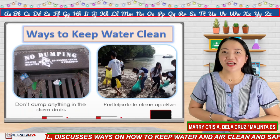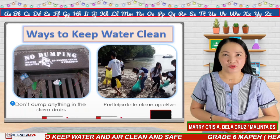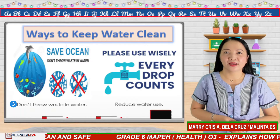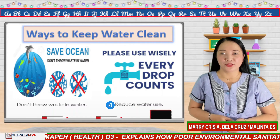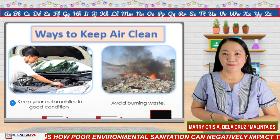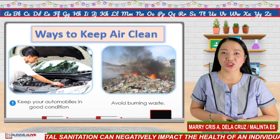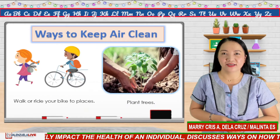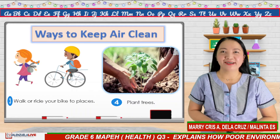Here are the ways you can do to keep our water clean: number one, don't dump anything in the storm drains; number two, participate in clean-up drives; number three, don't throw waste in the water. And here are ways to keep our air clean: avoid burning non-biodegradable waste; walk or ride your bike to places; and plant trees.